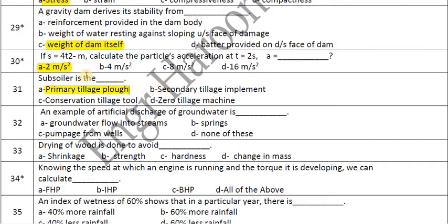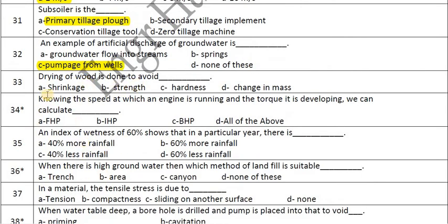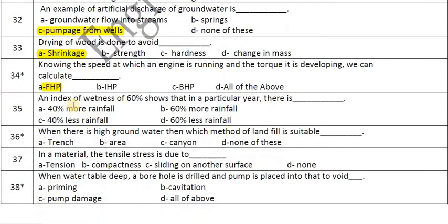An example of artificial discharge of groundwater is pumping from wells. Drying of wood is done to avoid its shrinkage. Knowing the speed at which an engine is running and the torque it is developing, we can calculate FHP. An index of wetness of 60% shows that in a particular year there is 40% less rainfall.